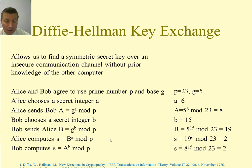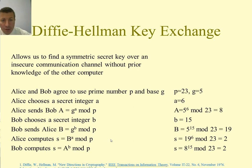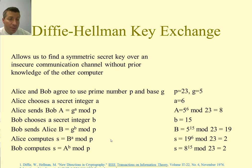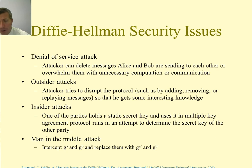This is the Diffie-Hellman algorithm. The paper 'New Directions in Cryptography' is one of the most instrumental papers for encryption — published back in 1976, it's still quite popular, so take a look at it when you have a chance.